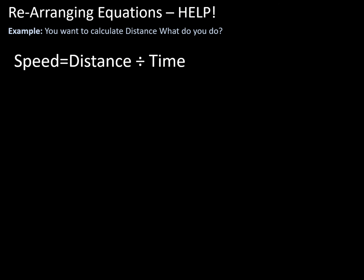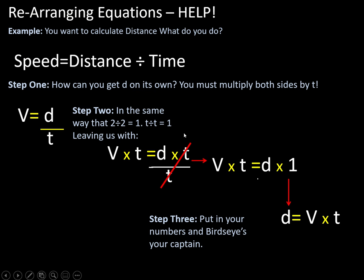And final example, speed equals distance divided by time. We want to get, in this case, D on its own. So what we're going to do this time, we're going to have to multiply both sides by T. So we want to get D on its own. We need to get rid of this T down there. And again, you verbalize by saying whatever I do on this side of the equal sign, I do on that side.